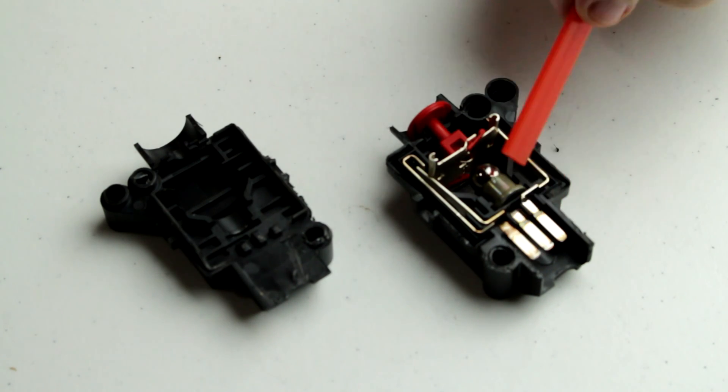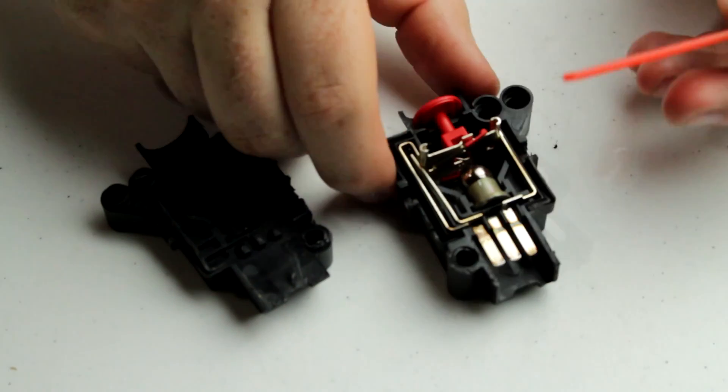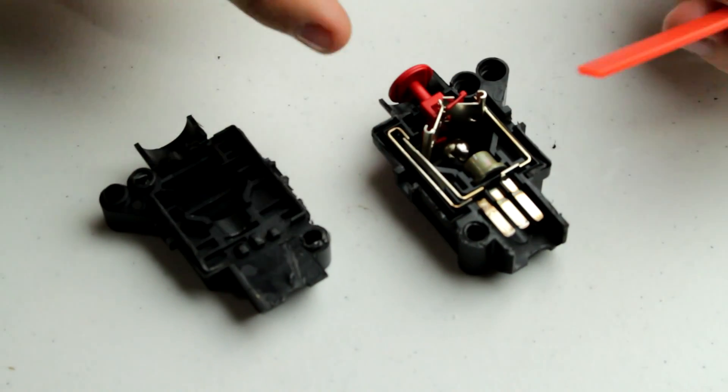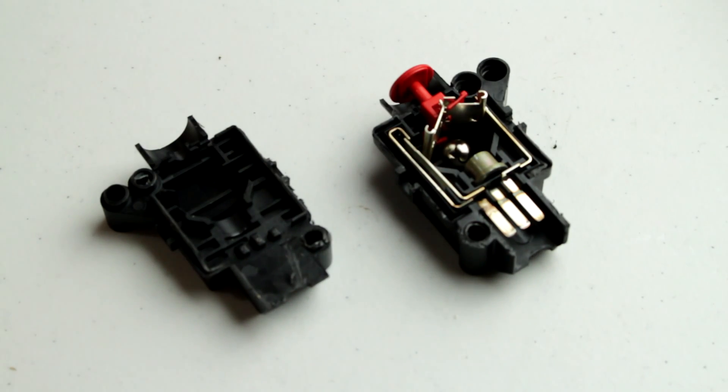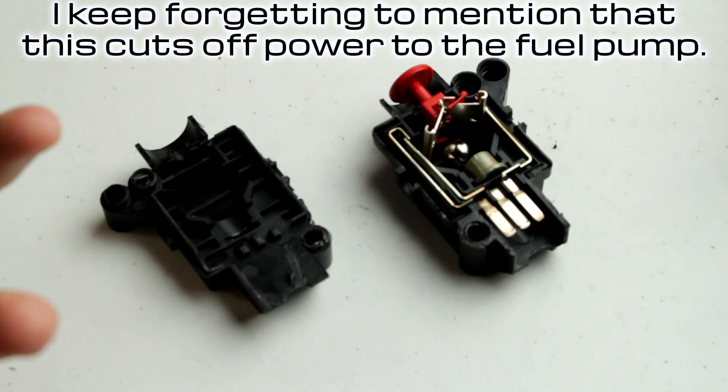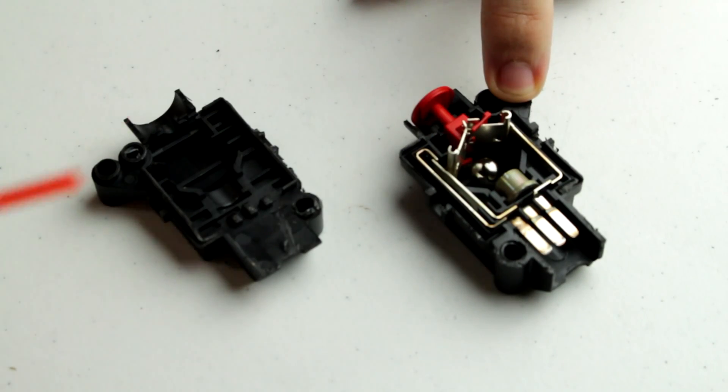So this normally closed circuit goes to the fuel pump because the fuel pump needs to always be able to run until there's an accident, in which case there needs to be electrical contact to send to either a safety component or the computer so that it knows that there's been an accident, the fuel pump is off, something needs to happen. So that's how an inertia switch works.